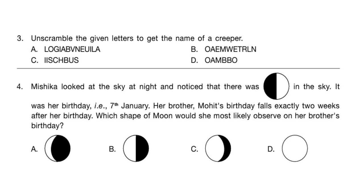Question 4: Mishika looked at the sky at night and noticed there was a half moon. It was her birthday, 7th January. Her brother Mohit's birthday falls exactly two weeks after her birthday. Which shape of moon would she most likely observe on her brother's birthday? The answer is option B.